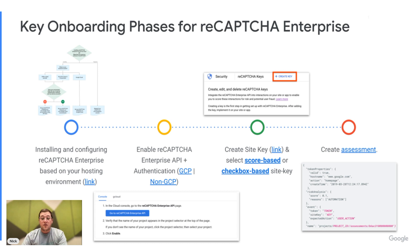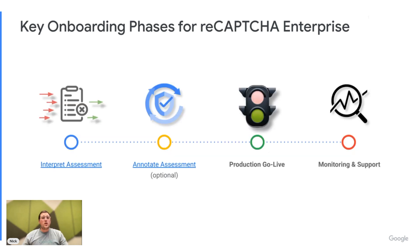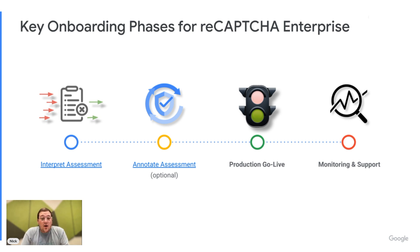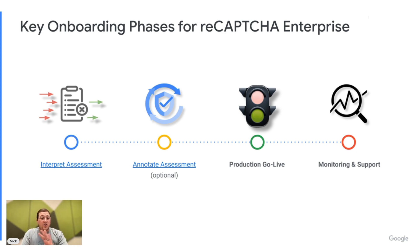From there you're creating your first assessment. Once you've created your first assessment, you need to know how to interpret it, and we've aligned documentation on what that looks like. Once you've interpreted that assessment, you have the option to go a step further and annotate that assessment — that's completely optional, it's up to you. But from there you're in the production phase, the go live, and now you want to keep an eye on it and get support if you need it.